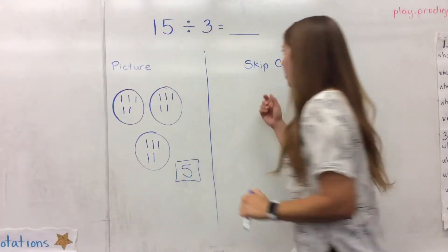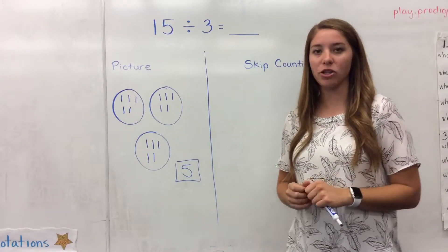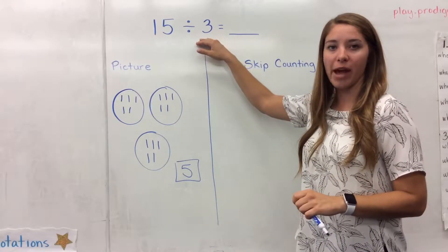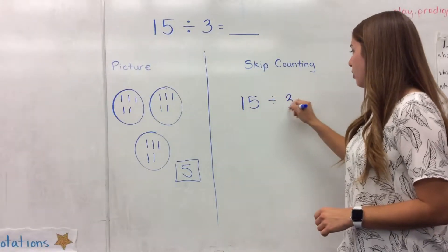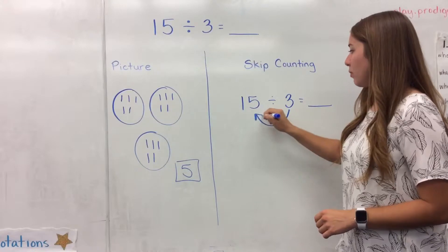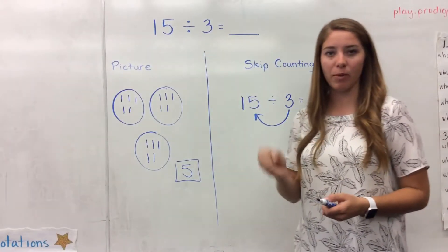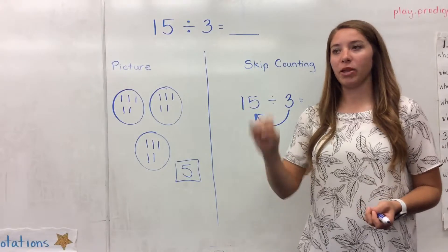And then the other strategy that we use is skip counting. This is going to be your fastest, most efficient strategy until you've memorized all of your math facts. And the way that we do this when we have a problem like 15 divided by 3 is that we skip count by the number 3 until we get to 15, and we stop, and we see how many times we had to skip count. So if I do that, I would count by 3s.